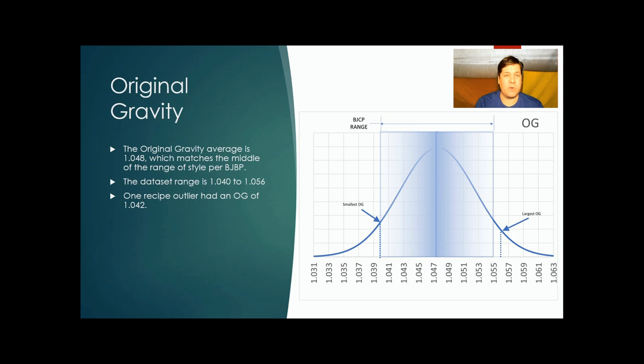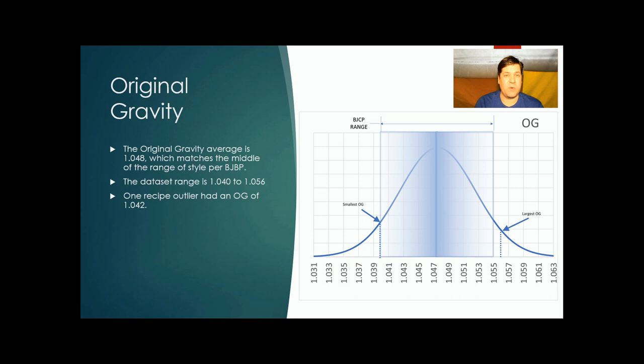Original gravity. Last week we presented on the Hefeweizen, which tended to be on the high side of the BJCP guidelines. This original gravity is right dead set in the middle, right at 1.048. The data set range is between 1.040 to 1.056, right there within the tops and bottoms of what the guidelines say. This is not a beer where people try to overload you with malt and body.